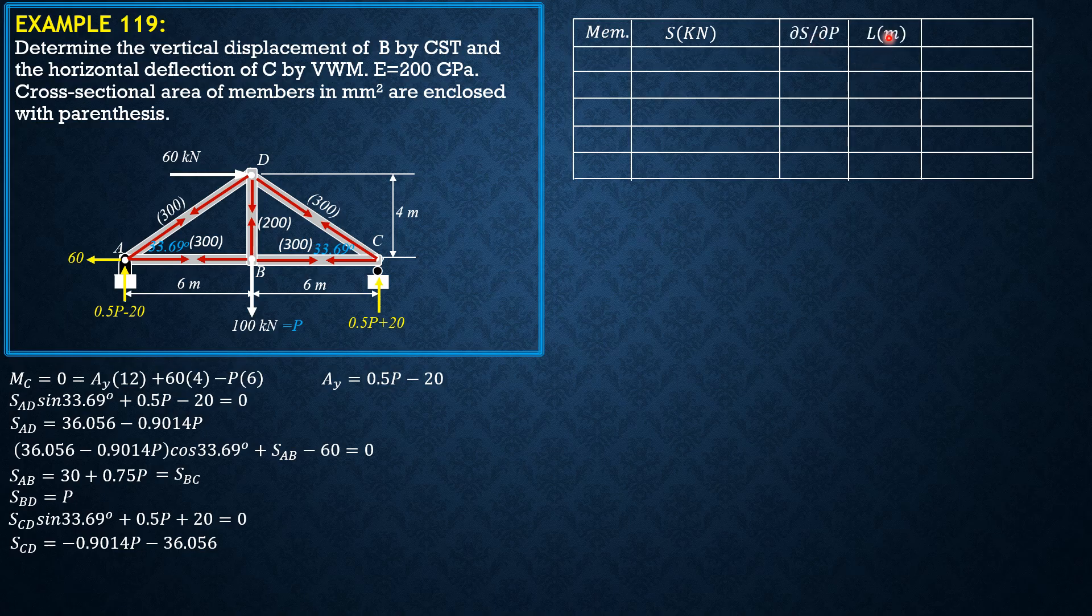And the length in meters, so therefore the product would be kilonewton meter: S times partial of S with respect to P times length. So we begin with member AD, its stress is 36.056 minus 0.9014P. The partial derivative is negative 0.9014.